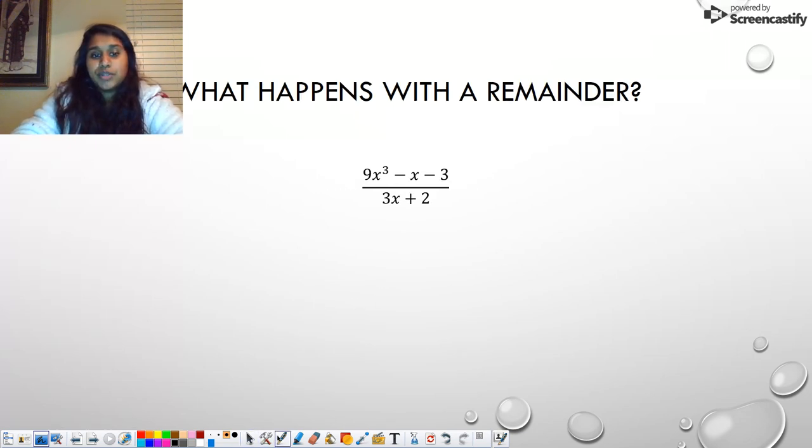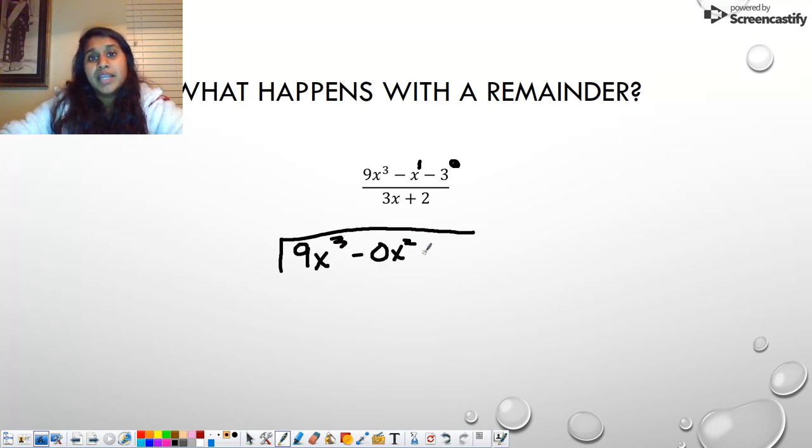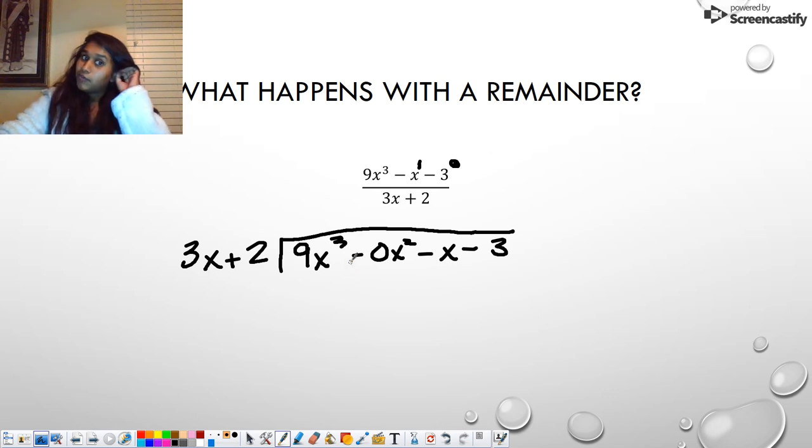But here's another one that I would like to do with you guys. What happens when we have a remainder? So far, our remainders have been 0. But let's look at an example where our remainder isn't 0. So I'm going to put my division sign, and then I'm going to check my exponents. I see an exponent of 3, an exponent of 1, and technically there's an exponent of 0 over here. But what's missing? My x squared. So I'm going to put a placeholder. 9x cubed minus 0x squared minus x minus 3. And I'm going to put my divisor out front.